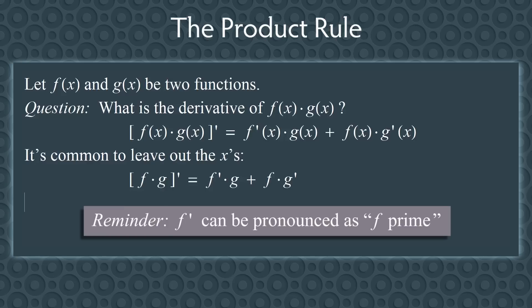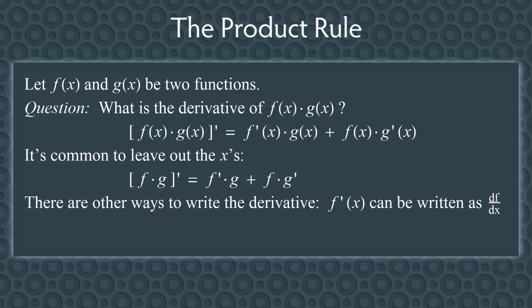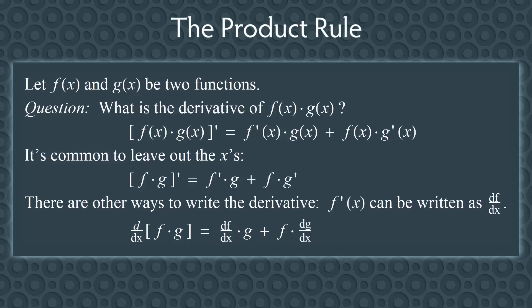Don't forget that the derivative of f can also be pronounced as f prime. There are other ways to write the derivative. f′(x) can also be written as df/dx. Using this notation: d/dx[fg] equals df/dx times g plus f times dg/dx. Notice the d/dx at the beginning — we call this an operator, and it means to take the derivative of everything in the brackets. Here you have three different ways to write the product rule; they all say the same thing, only the notation is different.